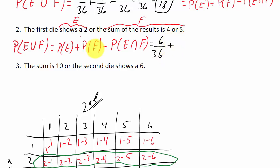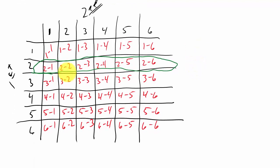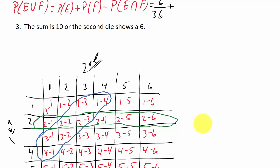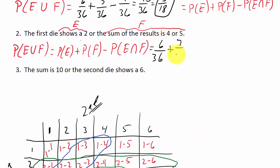Now for P(F), the sum is 4 or 5. Counting all outcomes that add up to 4 or 5, we get 1, 2, 3, 4, 5, 6, 7. So P(F) = 7/36.